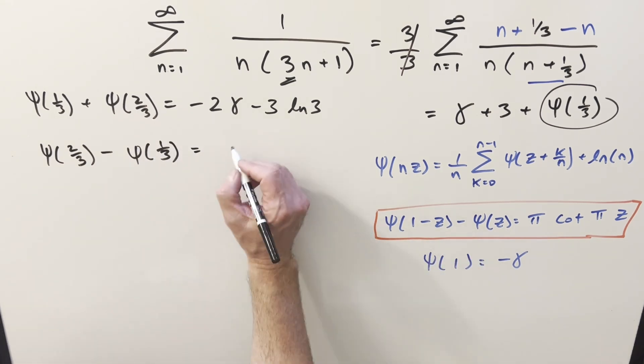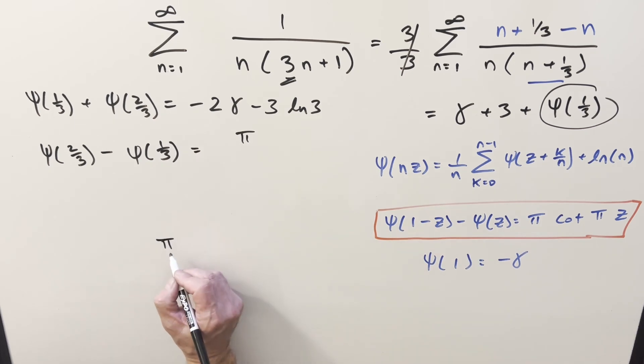And then for the right side, we're going to have pi. You could actually write this a different way. You could write it as pi over tan pi z. Sometimes I like this because I remember the values for tan, but it doesn't matter because the values of tan are the reciprocal of the values for cotangent.